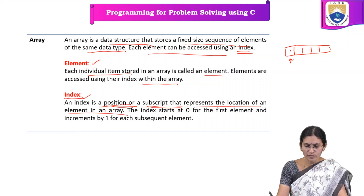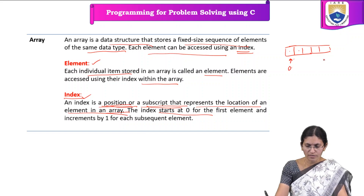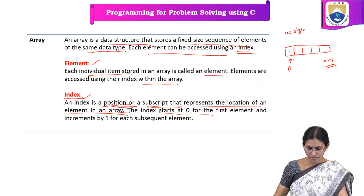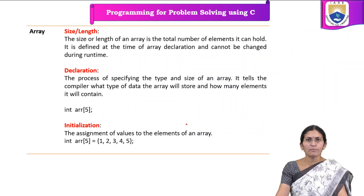The index of the array indicates which element is present at what particular location. Index starts at 0, so the first element is stored at index 0 and the last element is stored at index n minus 1, where n specifies the size of the array. The index increments by 1 for each subsequent element. Array elements are stored contiguously in memory locations.